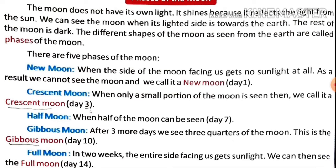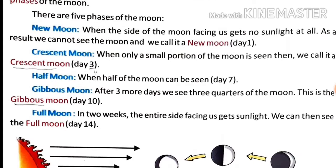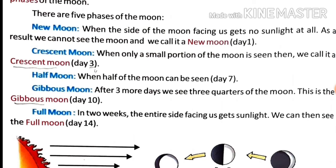There are five phases of the Moon. First is the new moon: when the side of the Moon facing us gets no sunlight at all, as a result we cannot see the Moon, and we call it a new moon. This happens on day one. Since the Moon's side facing Earth gets no sunlight, it cannot reflect light, so we cannot see it.